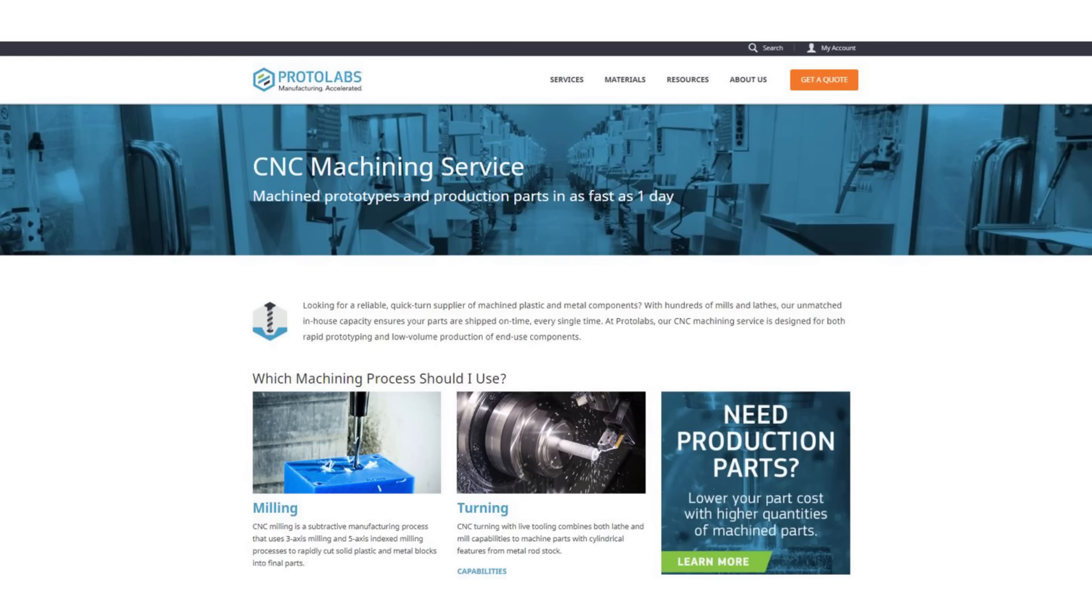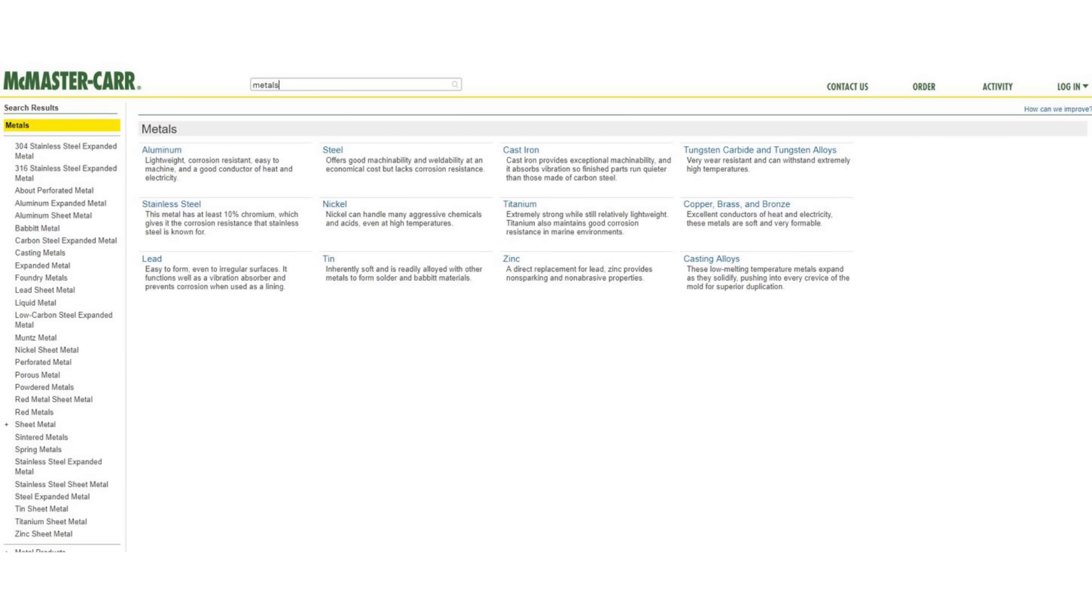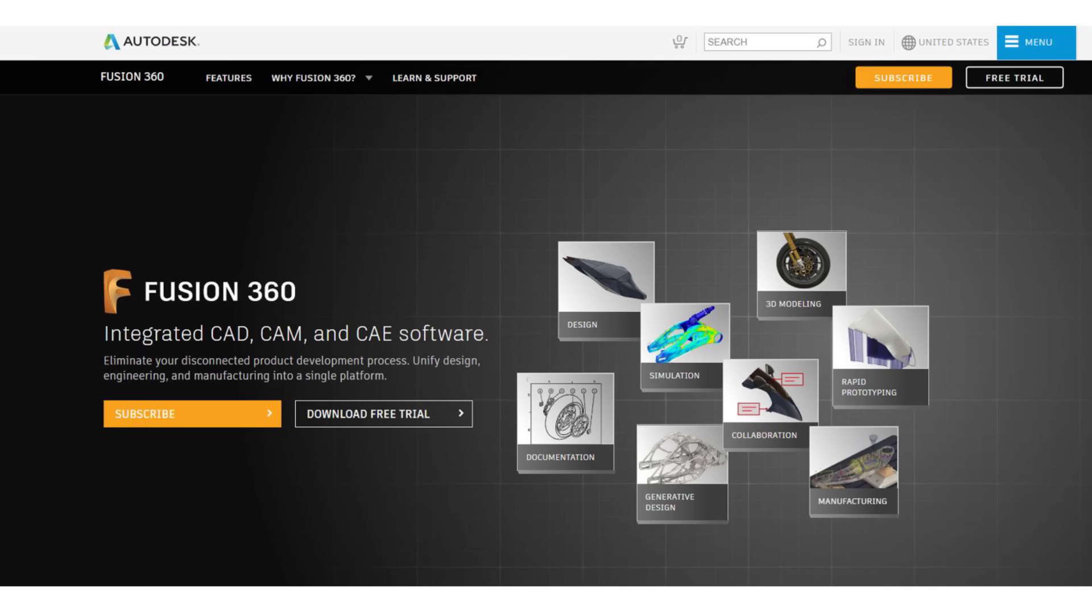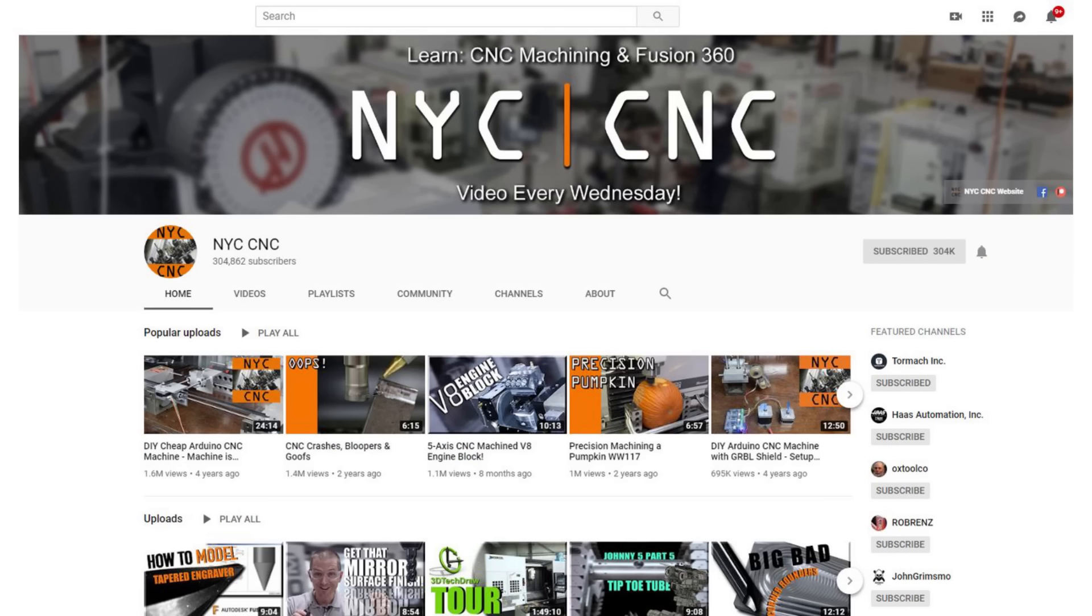For instant online part quotes, check out Protolabs, Fictive, and Exometry. For finding readily available materials, check out McMaster Carr and Online Metals. For modeling software, check out Fusion 360. And for more machining videos, check out the Haas YouTube channel and the NYC CNC YouTube channel.